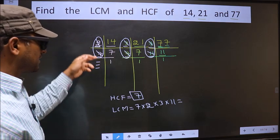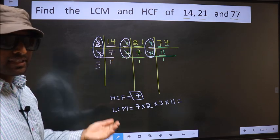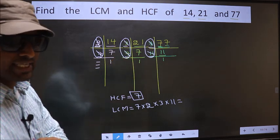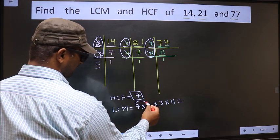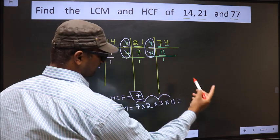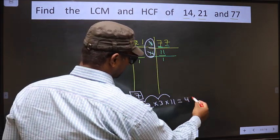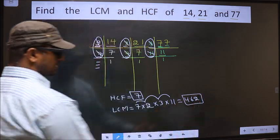Now each number has been cut. Therefore, our LCM is 7 times 2, 14 times 3, 42 times 11. We get 462 as our LCM.